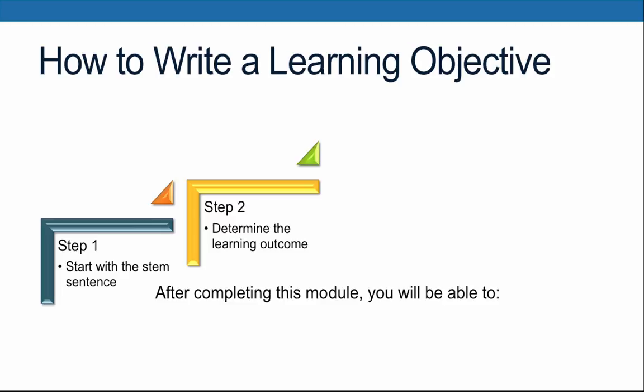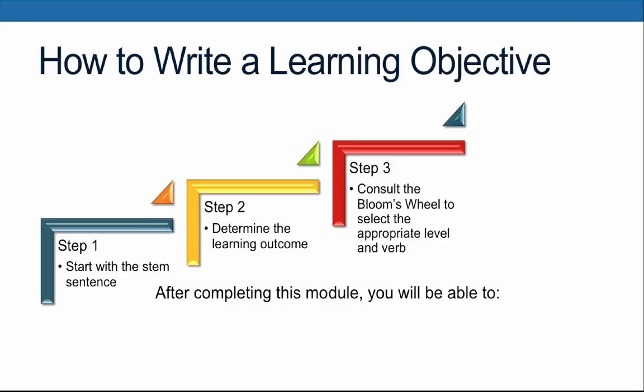I'll use this particular presentation as an example. When designing this video, I identified that I wanted the participants to know the six levels of Bloom's Taxonomy. I then asked myself: how will I be able to determine that the learners understand Bloom's Taxonomy? What can they do to demonstrate that they've mastered this concept? From this point, we'll move on to step three: consult the Bloom's Wheel to determine the appropriate level of learning and select an appropriate verb that reflects exactly what you want the learners to do.